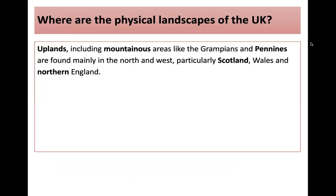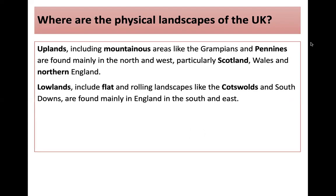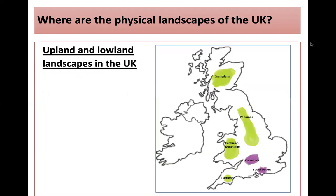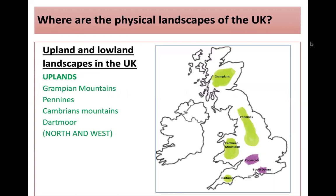Uplands, like our mountainous areas such as the Grampians and the Pennines, are found mainly in the north and west, particularly Scotland, Wales and northern England. The lowlands include flat and rolling landscapes like the Cotswolds and the South Downs. On this map, you can see where the Grampians, the Pennines, the Cambrians and Dartmoor are located in the north and west, and where the Cotswolds and South Downs are located as examples of lowlands.